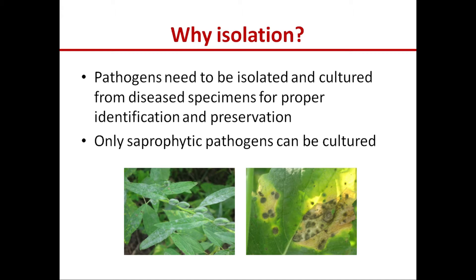These are the reasons why we need isolation of fungus from a diseased leaf, and they also apply to isolating any other pathogen. We should know that only saprophytic pathogens can be cultured in the lab. Saprophytes are those which can grow on dead organic material for their survival; they don't need a living host. In the picture on the left, there is powdery mildew disease — powdery mildew pathogens are obligate parasites and cannot be cultured in the lab. There is no question of isolating obligate pathogens like powdery mildew, rust, or downy mildew.